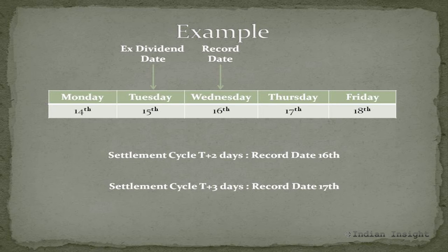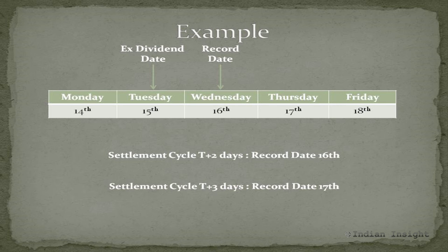If the exchange follows a T+2 settlement cycle, the transaction is settled in 2 days and records updated in 2 days. In this scenario, the record date would be 1 day after the ex-dividend date, meaning anyone buying the stock 1 day before the ex-dividend date will appear on the records by the record date. On the other hand, if the exchange follows a T+3 settlement cycle, the record date would be on the 17th — 2 days after the ex-dividend date — so that anyone buying 1 day before the ex-dividend date is still recorded as a shareholder by the record date.